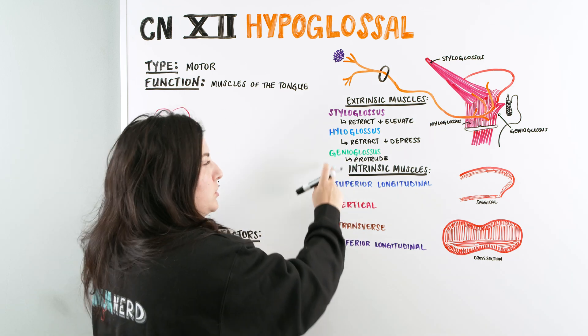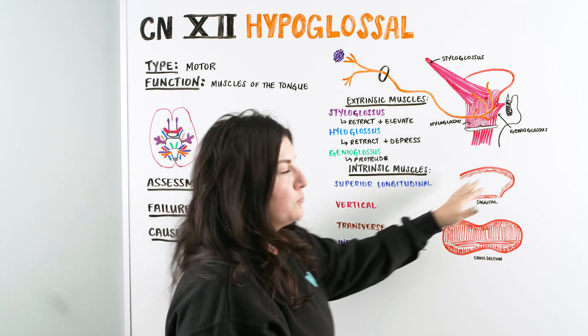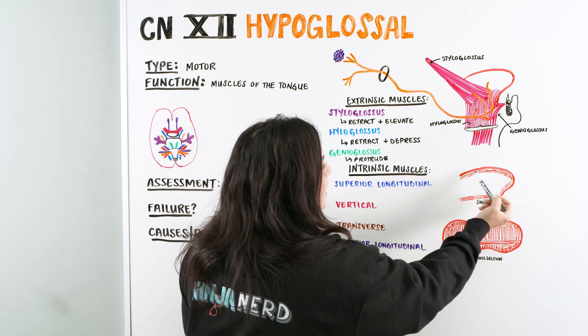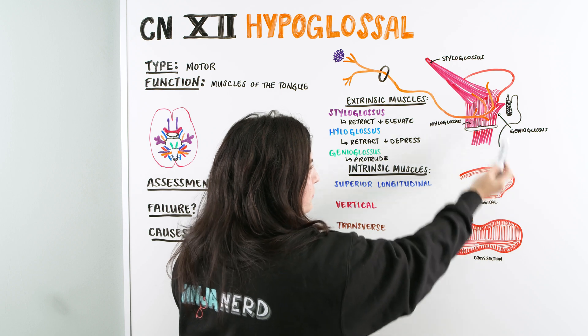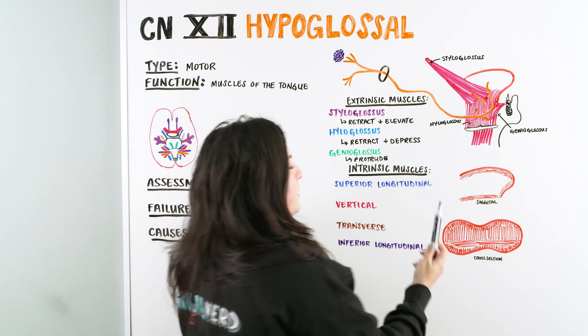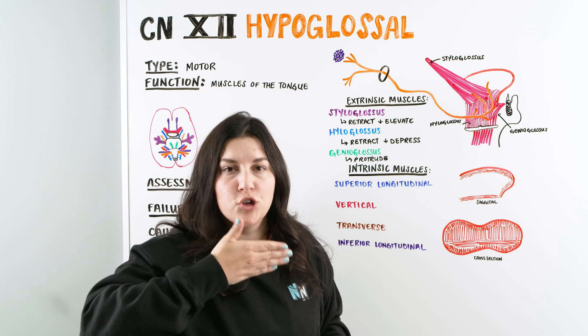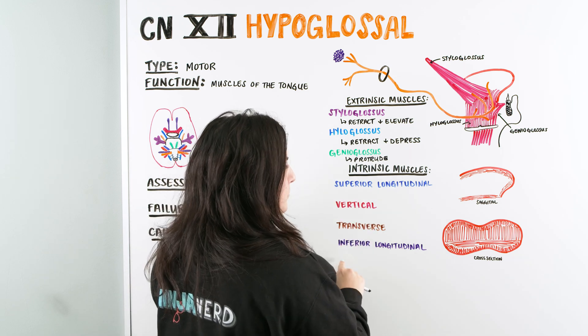And then we also have the genioglossus, or the intrinsic muscles underneath here. And the intrinsic muscles are the muscles within the tongue. So as we can see, we have a side view here, a little bit of a subtle view of the tongue. So we just took it out of this diagram. Now we're looking at it without all the extra muscles around it. And then we can also take a cross-section of the tongue. So if you were to take someone's tongue, chop it right in half, and be able to look at it.